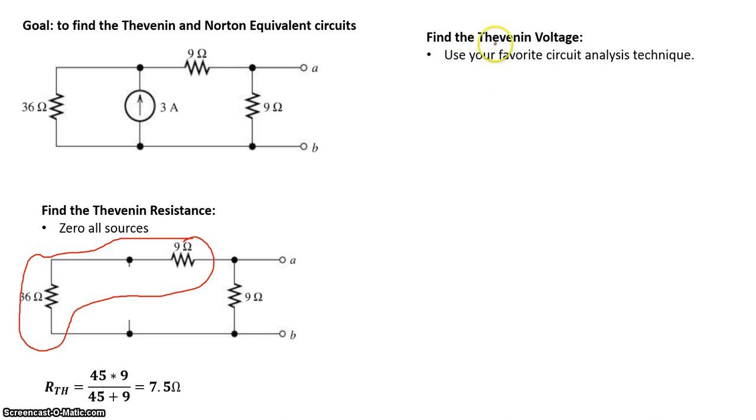Now our goal is to find the Thevenin voltage. To do this, we can apply a number of different techniques. You can use whatever your favorite circuit analysis technique: loop analysis, node analysis, voltage divider, current divider, whatever you want. Now in this particular example, I will use the nodal analysis. That happens to be my favorite circuit analysis technique.